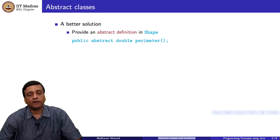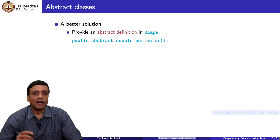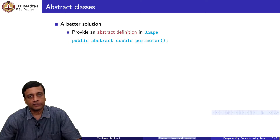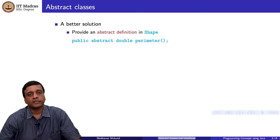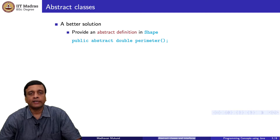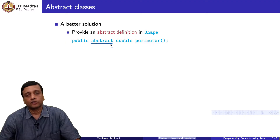A better way of doing this is to create what is called an abstract definition. Just like a class is a template in itself, within a class you are creating a template for a function — you are providing a signature for a function but not providing the body. You are just promising that there is a function called perimeter whose return value is double, which does not take any arguments, and you signal this using the keyword abstract that Java uses.